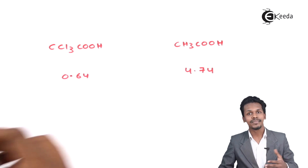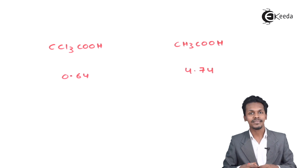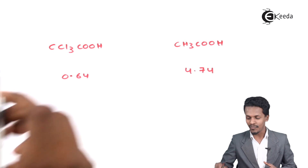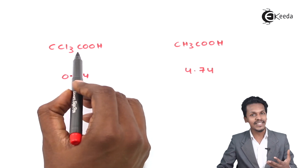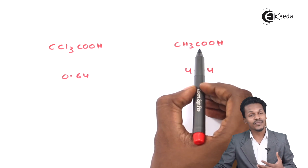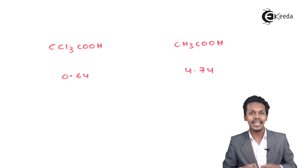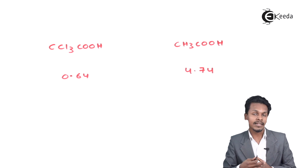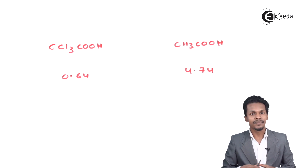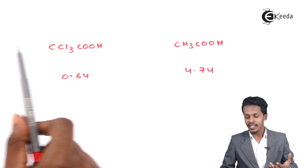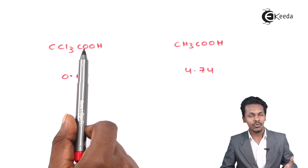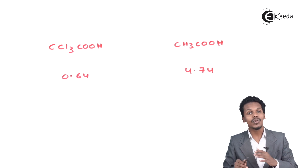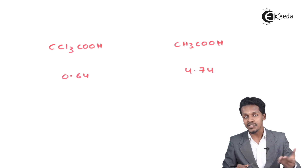The more easily the H⁺ ion is removed, the more acidic the molecule will be. So trichloroacetic acid is more acidic compared to normal acetic acid. Furthermore, the acidic strength also depends on the distance at which the substituent is attached to the carboxyl group.